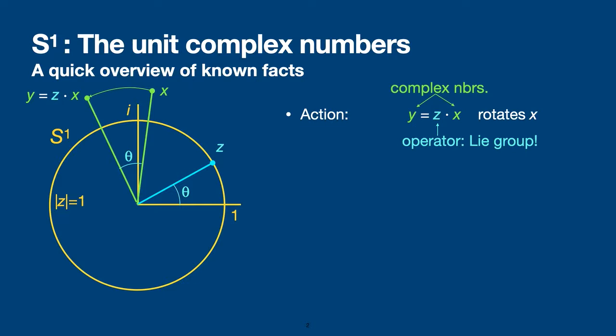With this example you should know what we're talking about and what a Lie group is, because you should know everything related to unit complex numbers. A unit complex number imposes a constraint on the complex plane which can be written as Z-conjugate times Z equals one. This imposes a unit norm on Z.